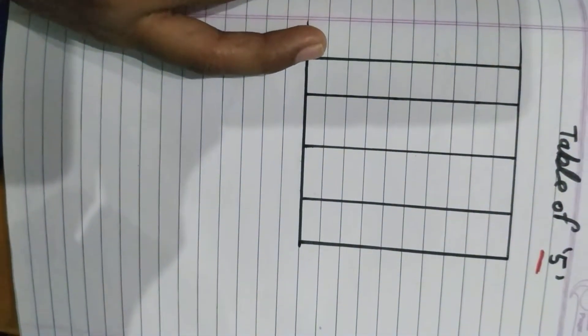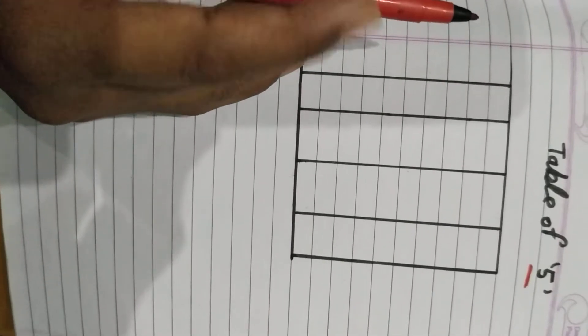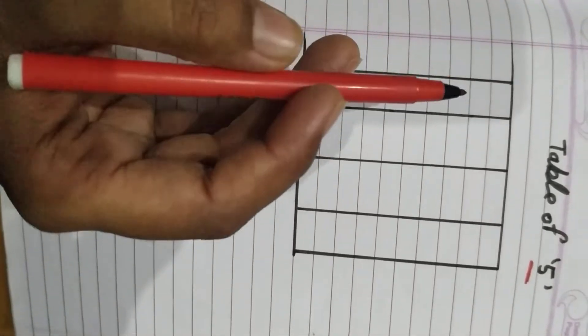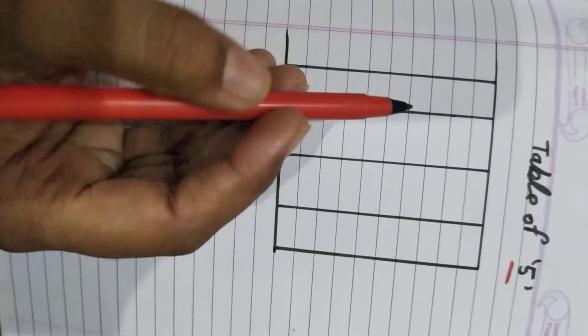I told you before two to four table in my previous video. In this video we will read and write table of five. Let's start how to write table of five.